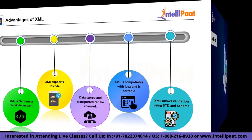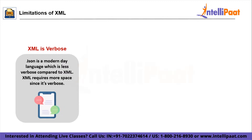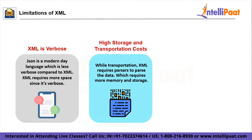Let's explore a few limitations of XML. The first is that XML is verbose and redundant compared to JSON. JSON is a modern language used everywhere nowadays — it's comparatively easier and used for simple applications. However, XML is still used for intercommunication of complex applications, which is why in the current market, the presence of XML is unavoidable. The next and more concerning limitation is that XML has high storage and transportation cost for large volumes of data. When you send information in the form of XML, you need additional parsers to parse the data, which requires more memory and storage.